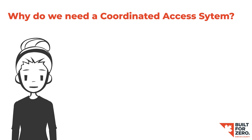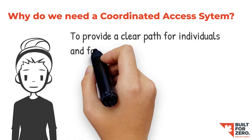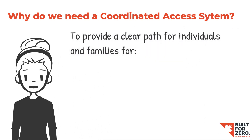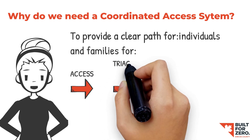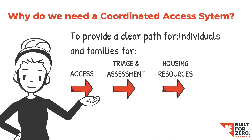Within a coordinated access system, individuals and families who are experiencing or at risk of homelessness are directed to access points to service, supported through triage and assessment to access the right resources in a community through system navigation, service planning and referrals, and supported to access specific housing resources that are coordinated centrally when needed.